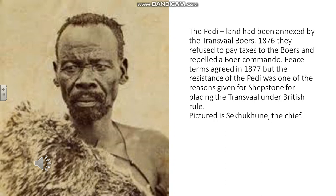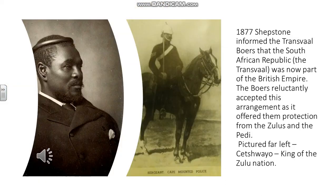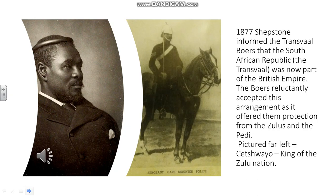But the bigger threat were the Zulus, who were on the border of the Transvaal. The Zulus were a kingdom and their king was Cetshwayo, pictured there on the left in western dress — a very impressive individual, very astute, and as we'll see, a great military commander.